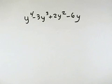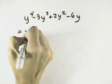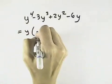We want to factor this polynomial completely, so we first look for the greatest common factor, which is y, and only y to the first power.